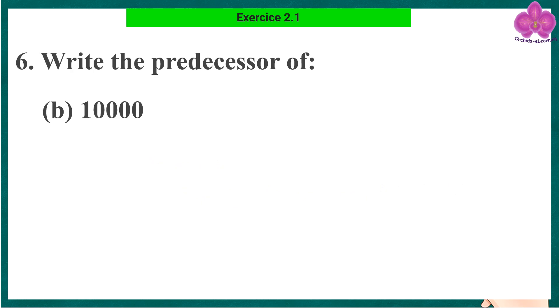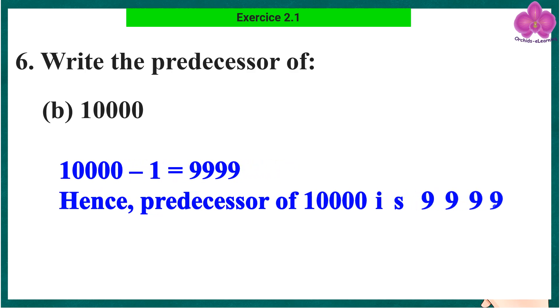Part b: 10,000. 10,000 minus 1 equals 9,999. Hence, predecessor of 10,000 is 9,999.